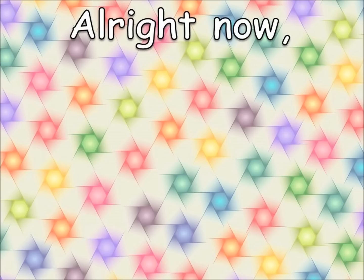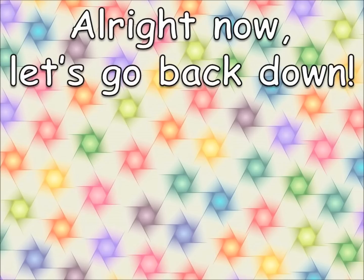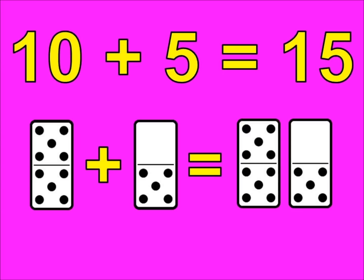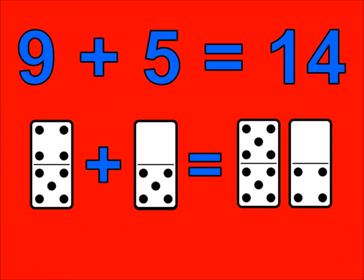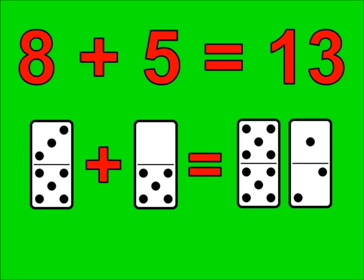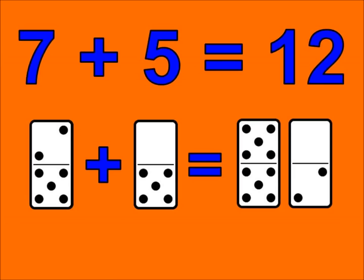Alright, now let's go back down. 10 plus 5 is 15. 9 plus 5 is 14. 8 plus 5 is 13. 7 plus 5 is 12.